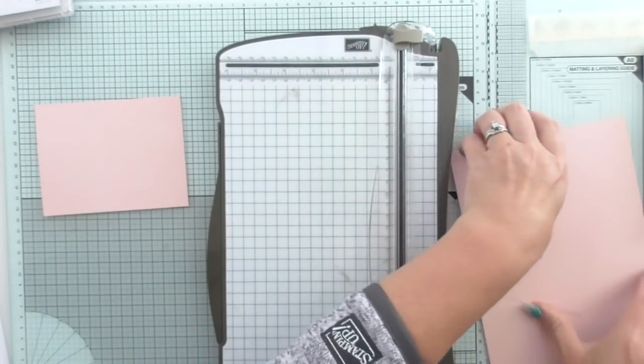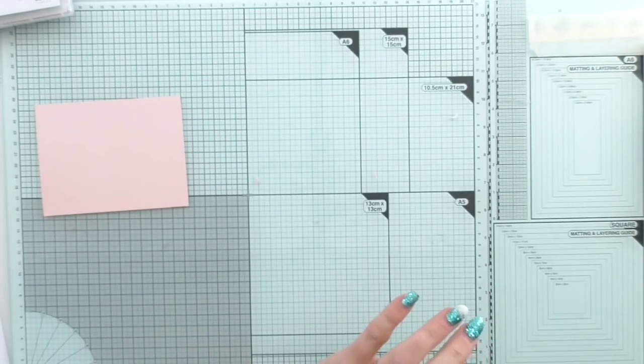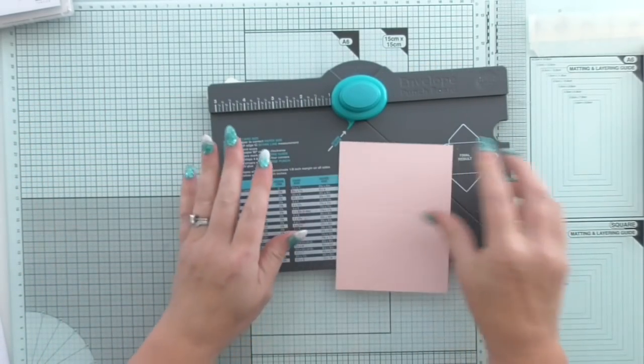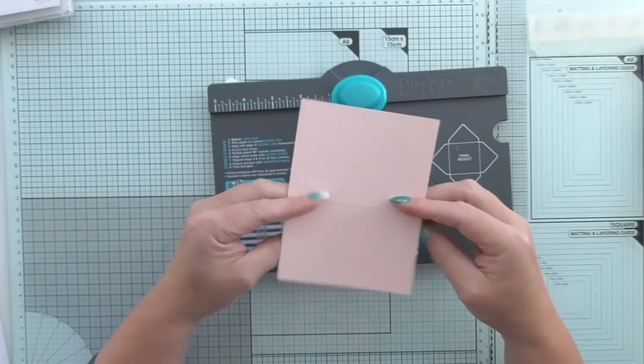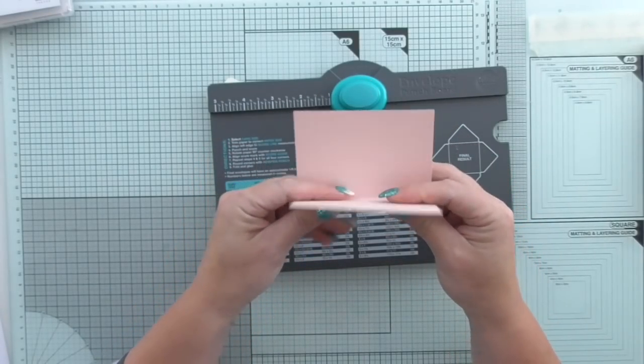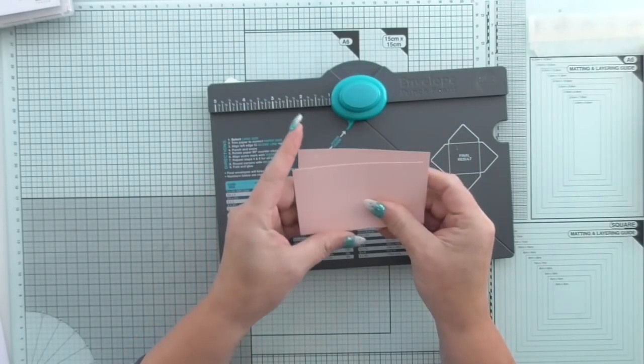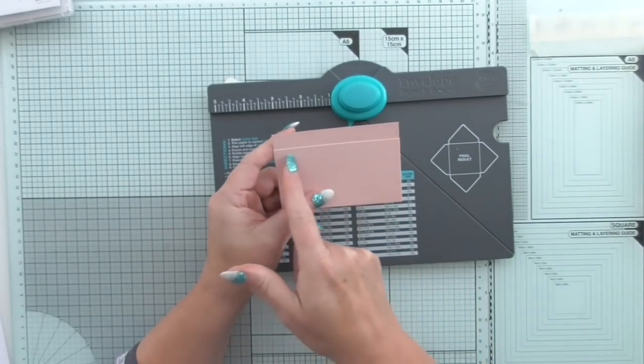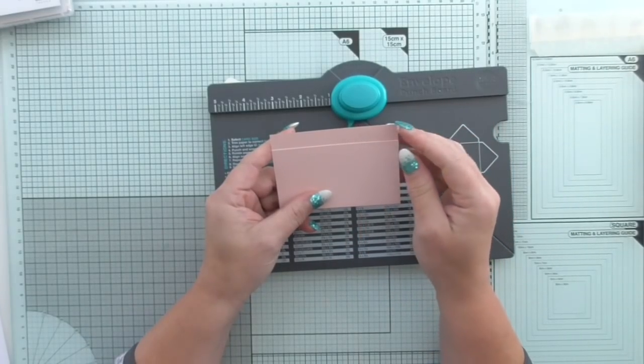I'm going to bring in my envelope punch board and we're going to first fold them score lines because you're going to have one side which is shorter than the other, and the shorter piece is your front. So we're going to create a tab here and a tab here, so they're on opposite sides. Think about it before you do it.